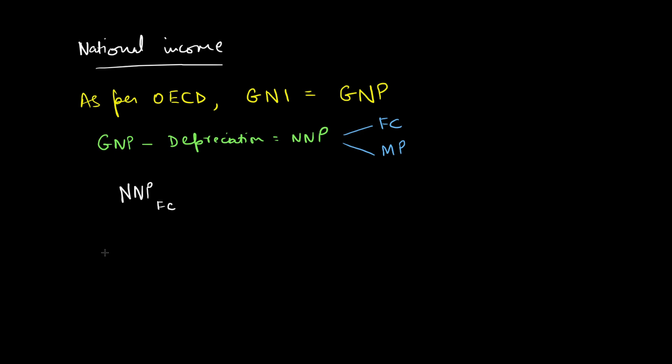And if you consider the factor cost, then it is the wholesale price of the goods and services right out of the factory floor. So, it doesn't include taxes. It doesn't include subsidies. So, that is NNP at factor cost. If you consider this value, that is GNI.